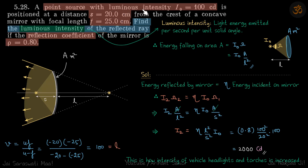A point source with luminous intensity i-naught is at a distance s from a concave mirror whose focal length is f. We need to find the luminous intensity of the reflected ray if the reflection coefficient of the mirror is 0.8, meaning 80% of the light is getting reflected.